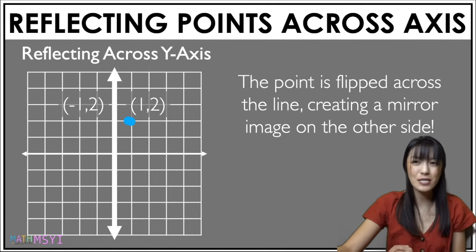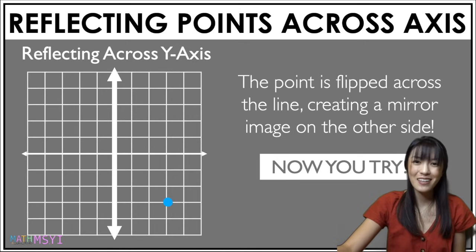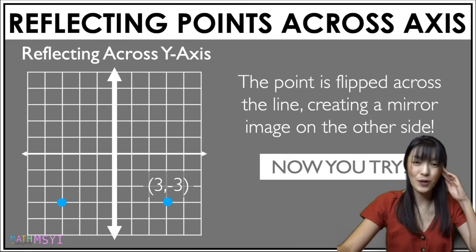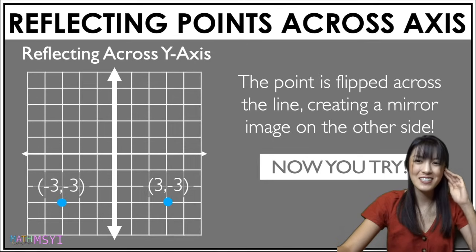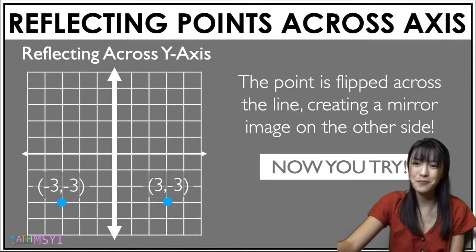Let's do some example problems. Put your finger where you think the point will be. Let's animate it. Now think of the coordinate — it's negative 3, negative 3.